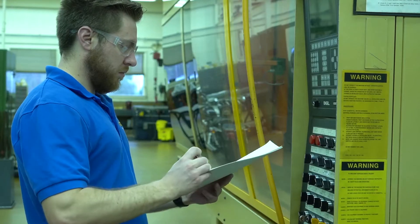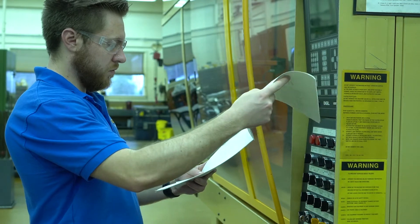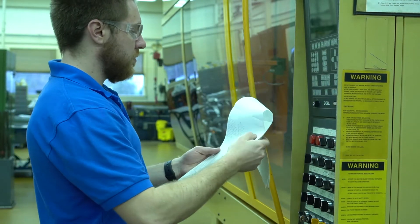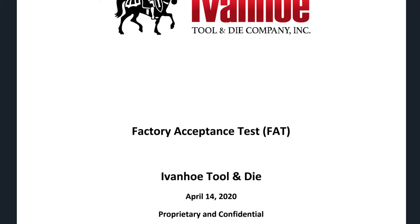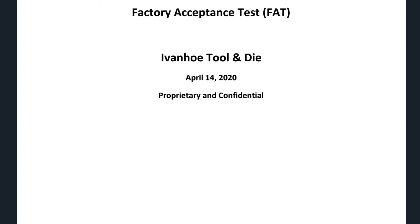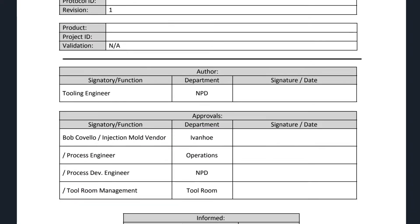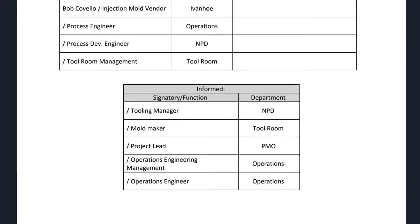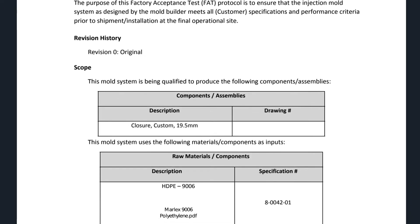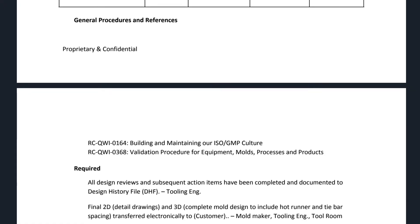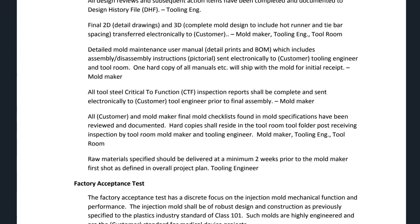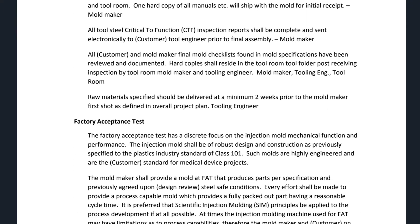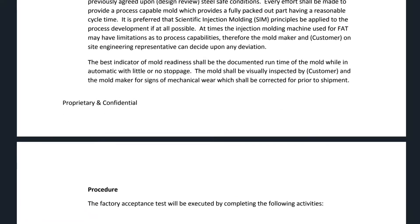When a new mold is acquired, it must be qualified before being brought into production. First, the tool maker must qualify and sign off approval on the tool. Then, the customer or user of the tool must complete an FAT test, or factory acceptance test, in order to continue with production. Once the mold has been qualified to necessary standards, it may enter into the production limit.